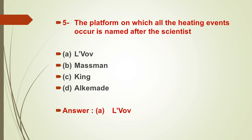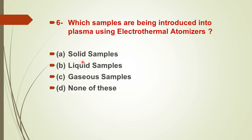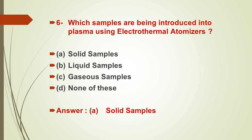Question number six: which samples are introduced into the plasma using electrothermal atomizers? Options: A) solid samples, B) liquid samples, C) gaseous samples, D) none of these. The right answer is A — solid samples are introduced into the plasma by the use of electrothermal atomizers.